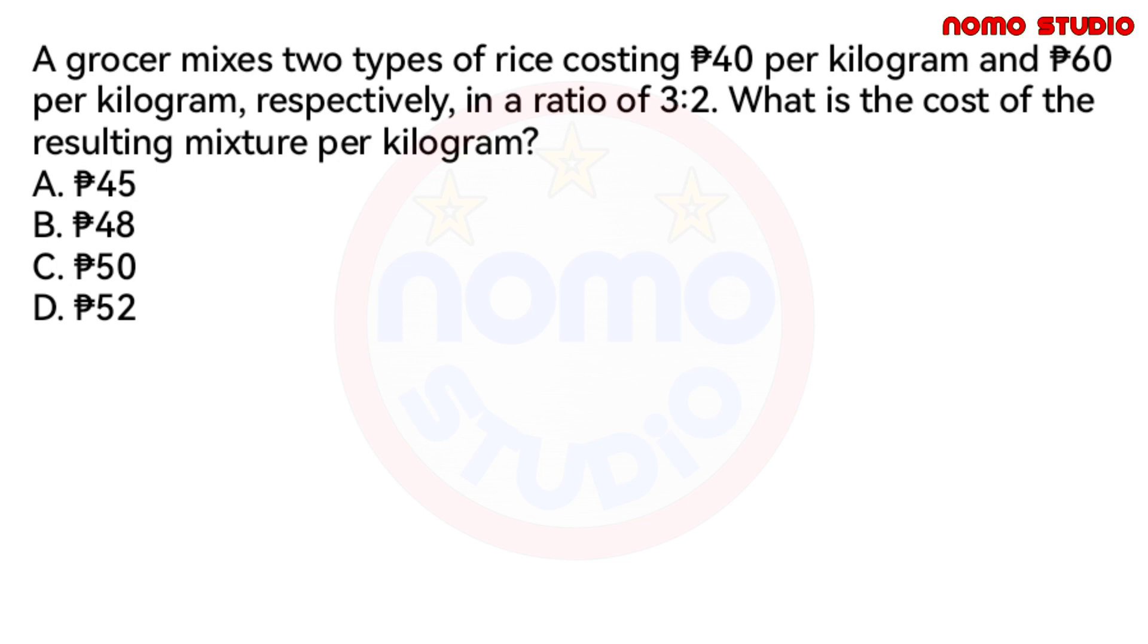A grocer mixes two types of rice costing 40 pesos per kilogram and 60 pesos per kilogram respectively in a ratio of 3 is to 2. What is the cost of the resulting mixture per kilogram? Is it 45 pesos, 48 pesos, 50 pesos, or 52 pesos? Feel free to pause the video.